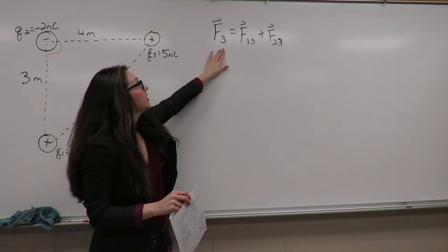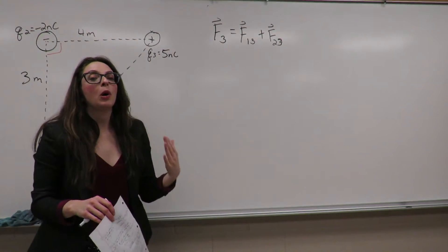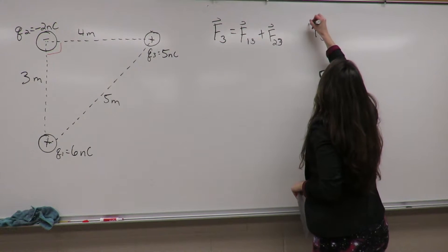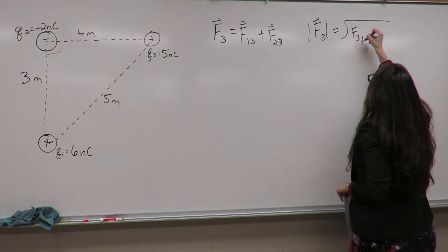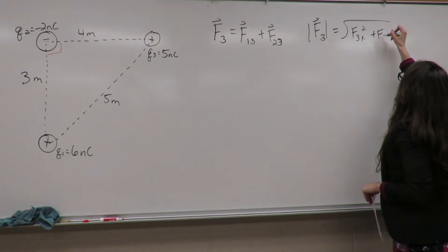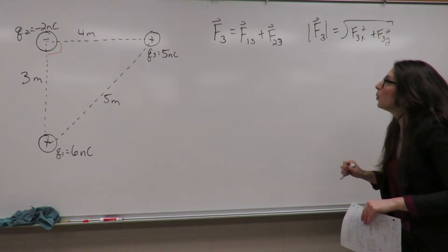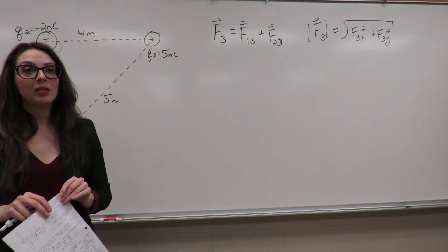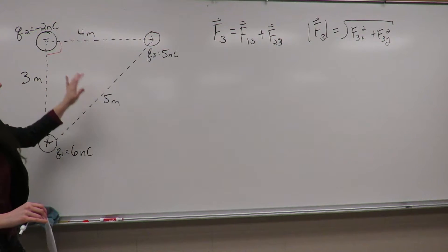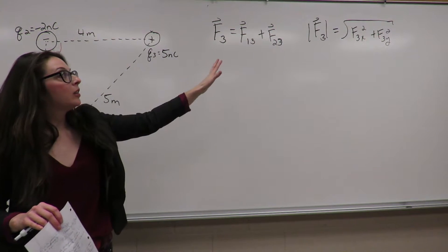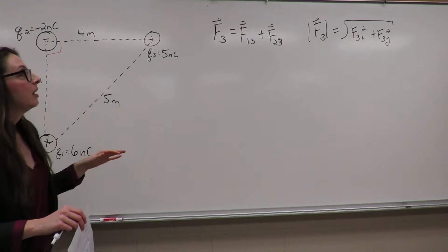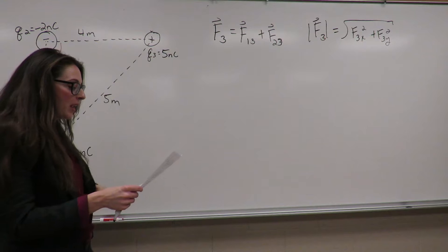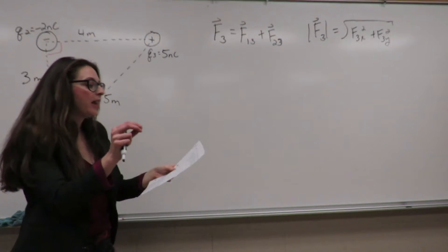We're going to break down the forces acting on charge 3 into both x and y components in order to get the magnitude F3. Remember that when working with vectors, the magnitude of the force is the square root of the x component squared plus the y component squared. So we're trying to get the x and y components of the force on charge 3 from charges 1 and 2, and then use those to get the magnitude and the angle from the positive x axis.